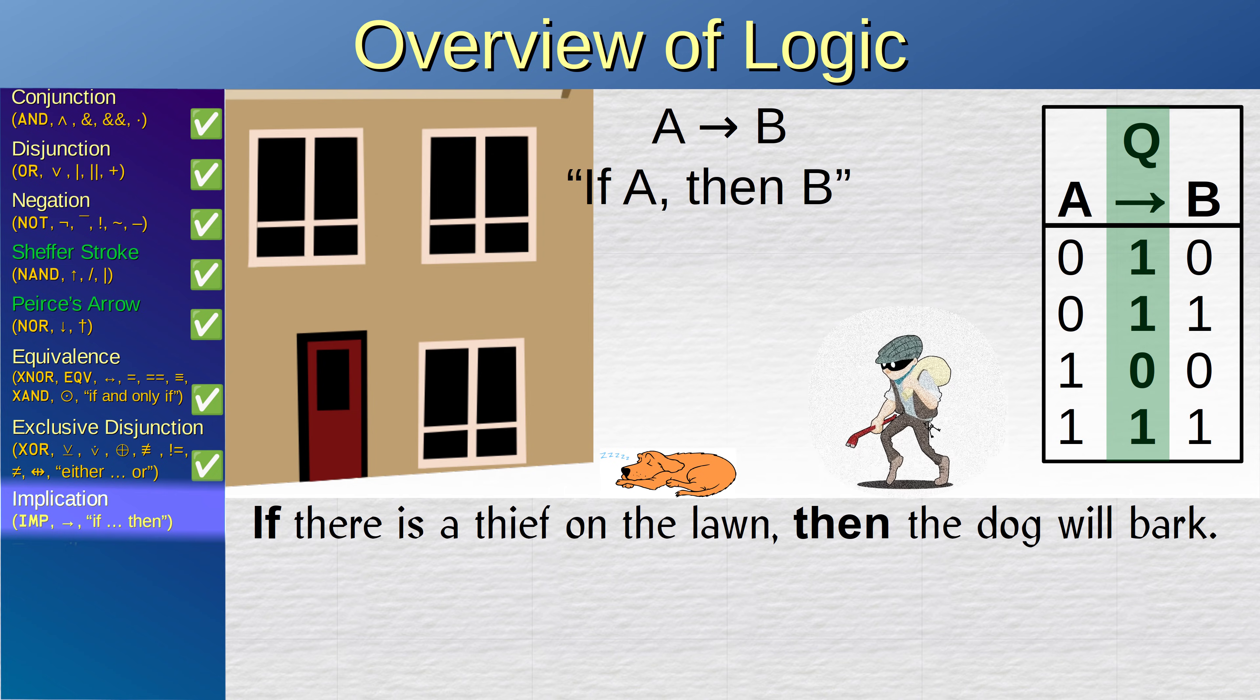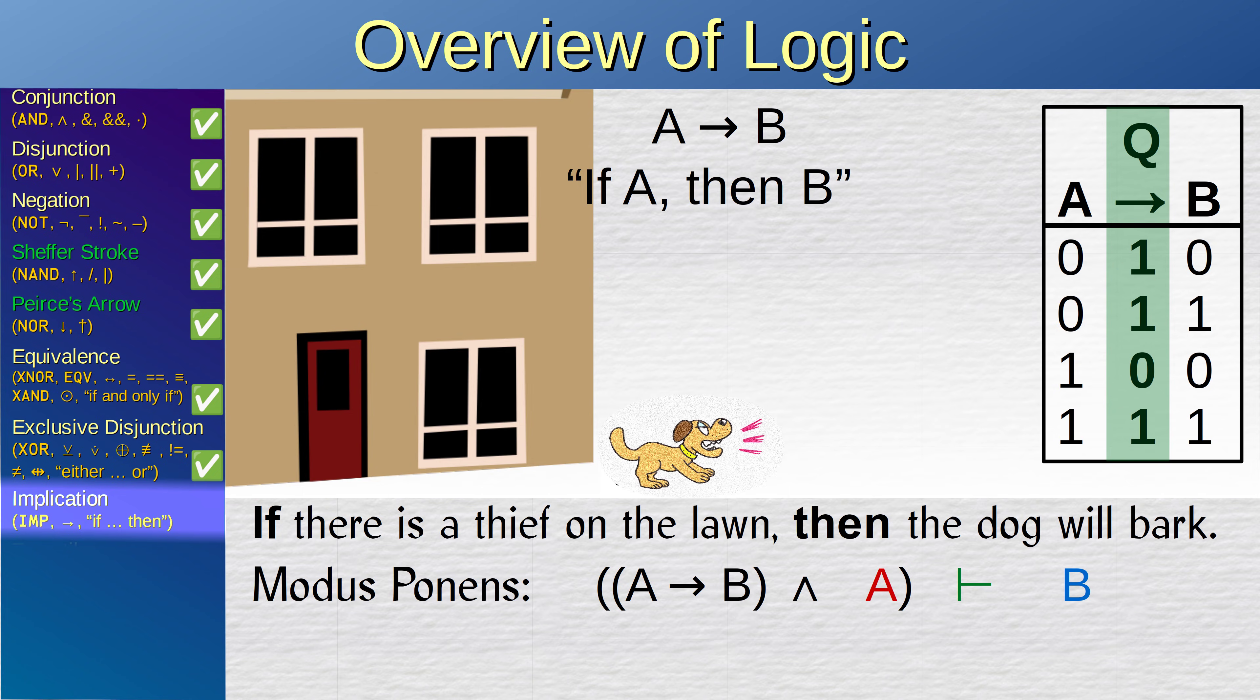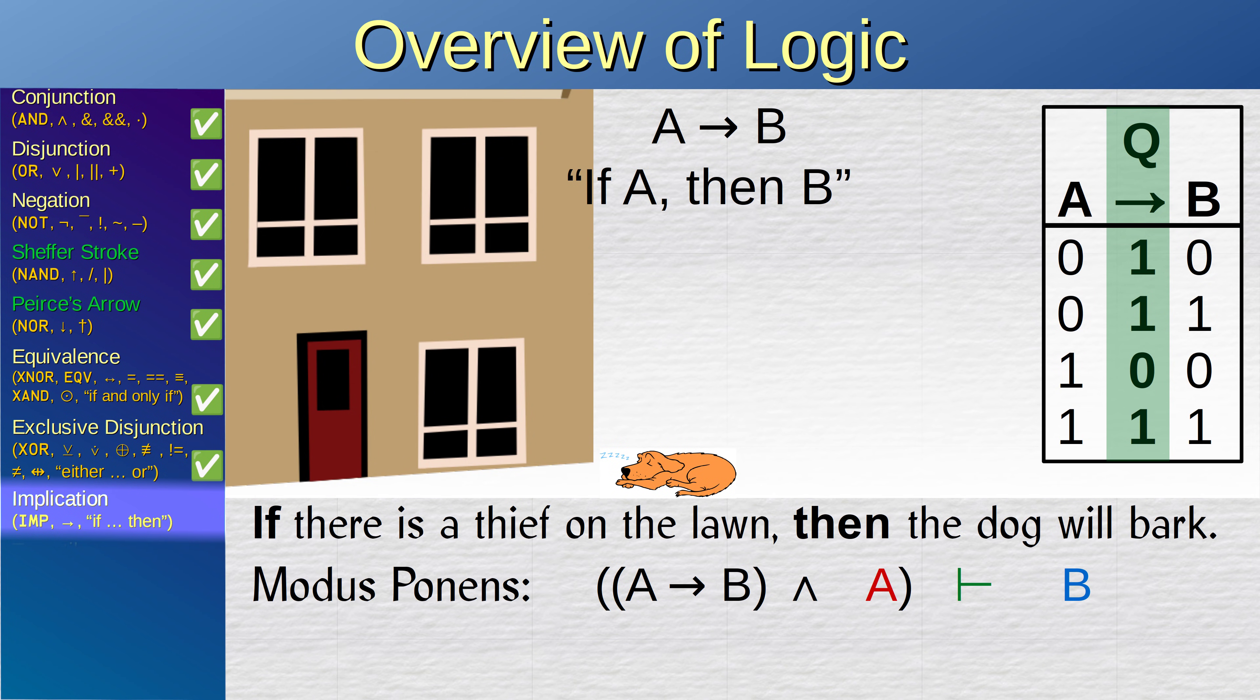Now if there is a thief, can we conclude that the dog will be barking? Yes. This conclusion is called modus ponens. If A implies B, and A is true, then B must be true. How about if the dog is barking, can we conclude that there is a thief? We cannot. The dog might bark whether there is a thief or not. But if the dog is not barking, can we conclude that there is no thief? Yes, we can make that conclusion. This conclusion is called modus tollens. If A implies B, but B is false, then A must be false.